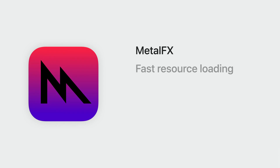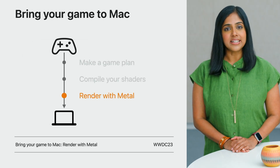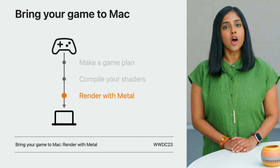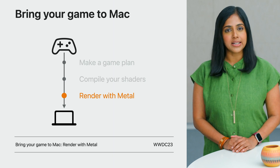It's time to take a look at rendering with Metal. Metal 3 provides all of the advanced graphics and compute features including Metal effects, fast resource loading, offline compilation, mesh shaders, and ray tracing used by modern high-end games, which makes converting your graphics code incredibly straightforward. The third session in the series, Render with Metal, is about how to port your renderer to Metal and get great performance out of Apple Silicon.